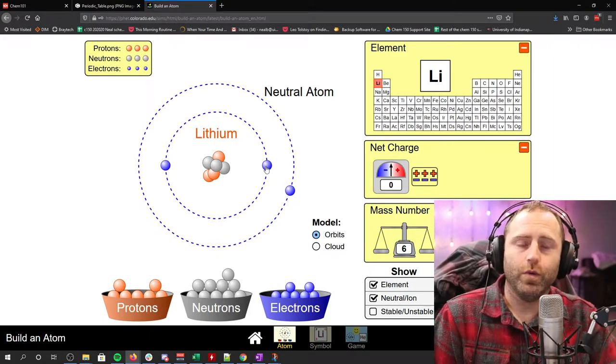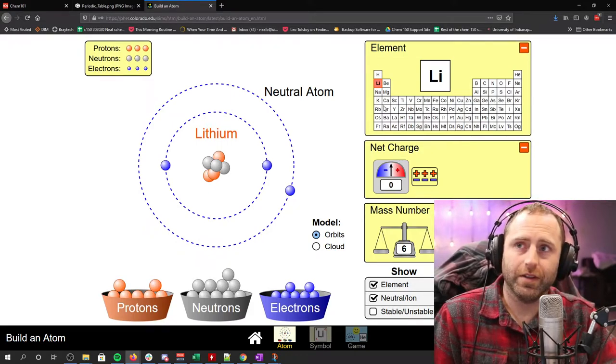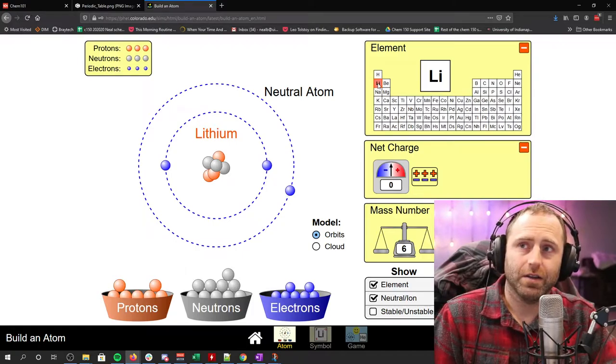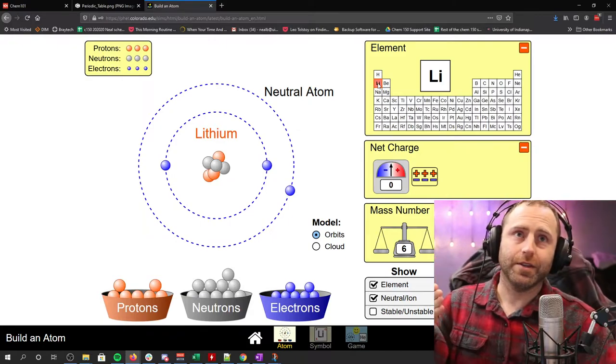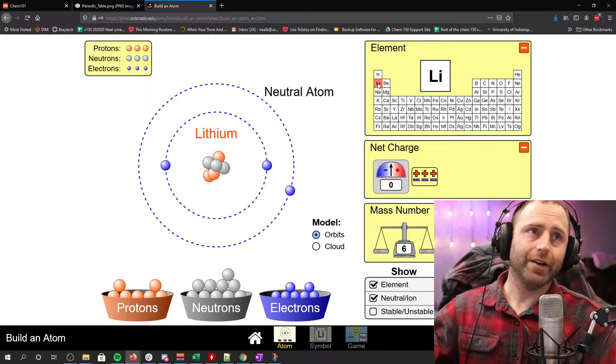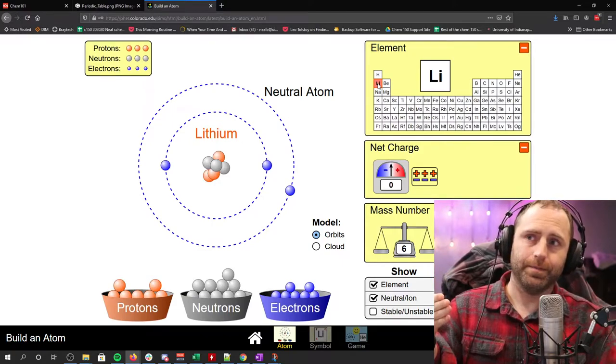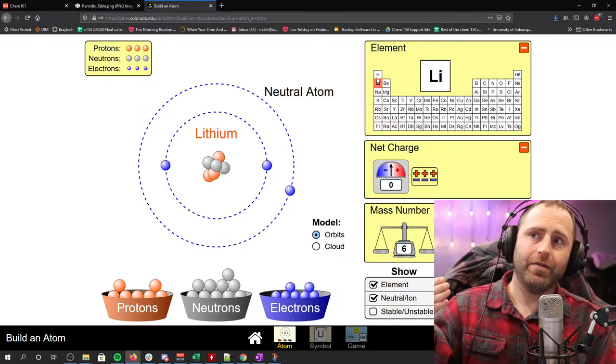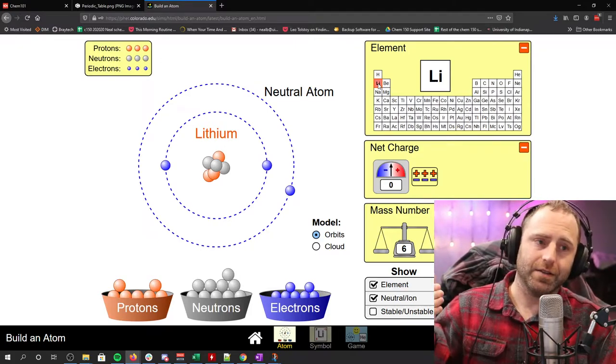Now, if we want to go to an ion form, so lithium's here on our periodic table. It's the pink one. It's kind of hard to see, right? Everything wants, all of our elements desire to get to what's called a noble gas configuration.